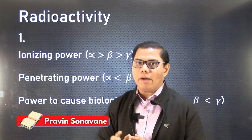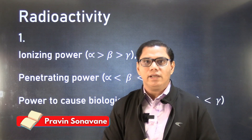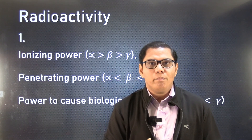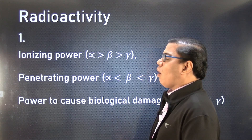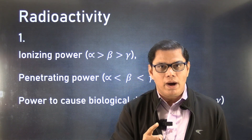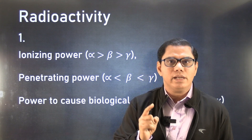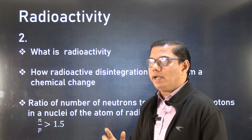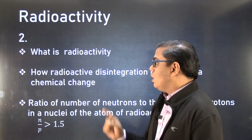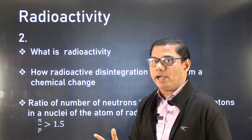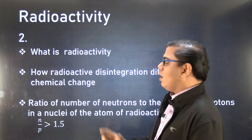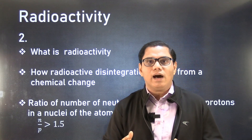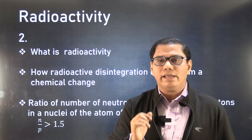We start with the first chapter: radioactivity. A question related to ionizing power, penetrating power, and power to cause biological damage is a must. Answers are given inside the bracket — you must know them. The second prediction from radioactivity is a question asking what is radioactivity, and also what is the difference between radioactive disintegration and chemical change as learned in chemistry.